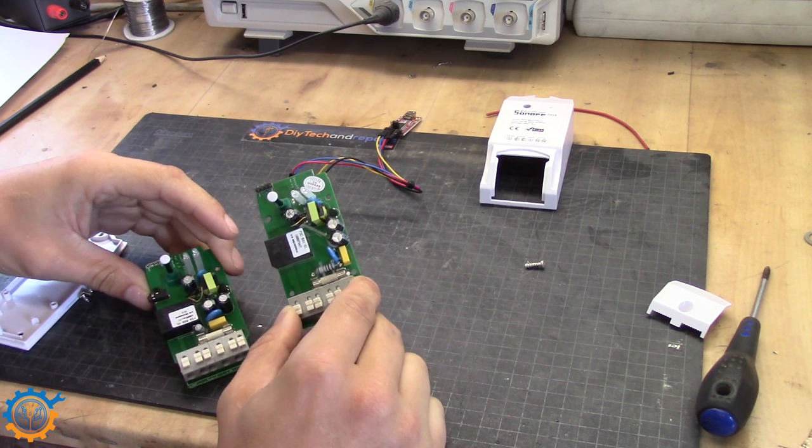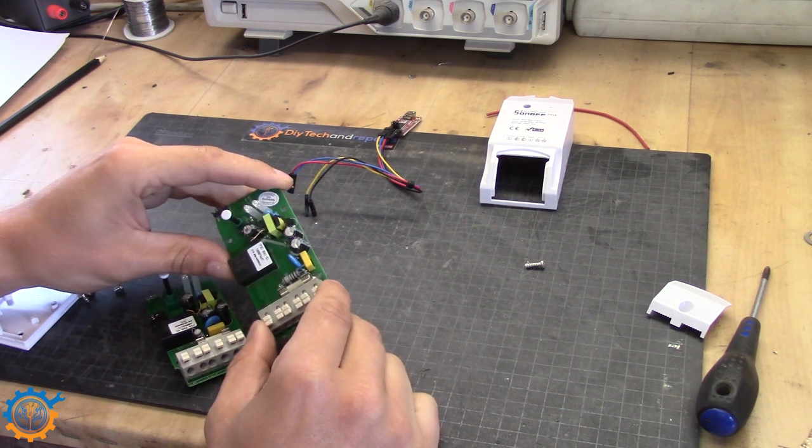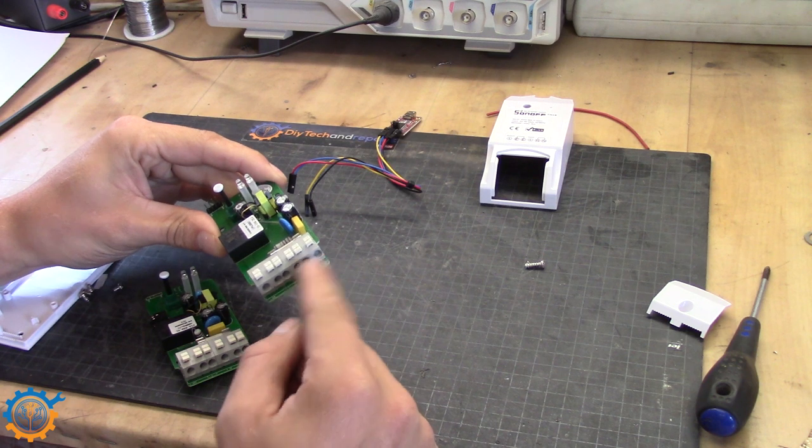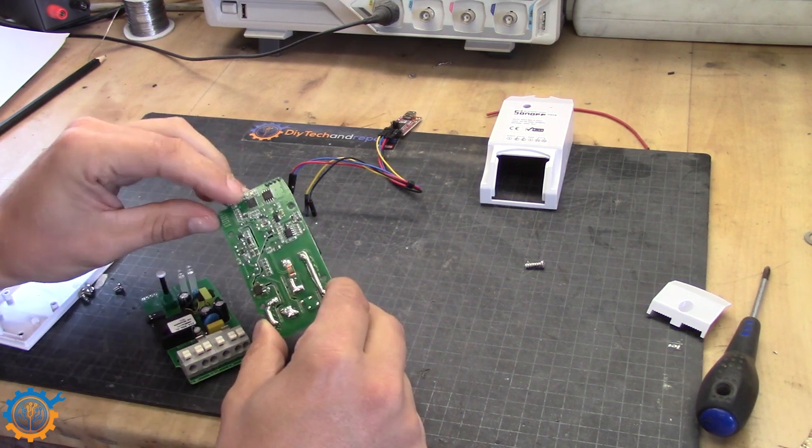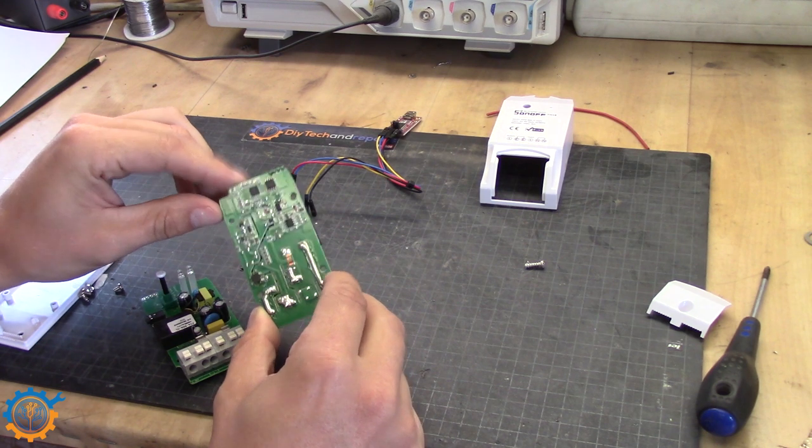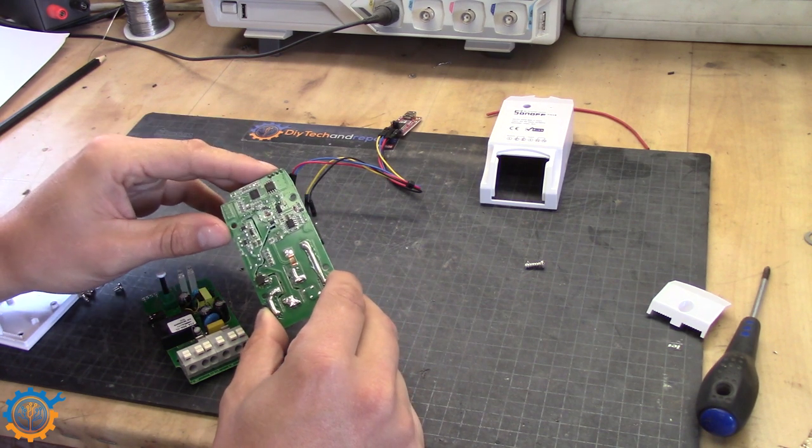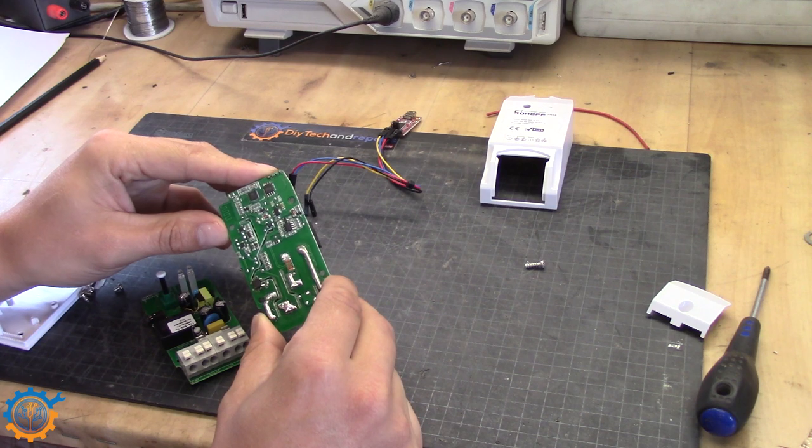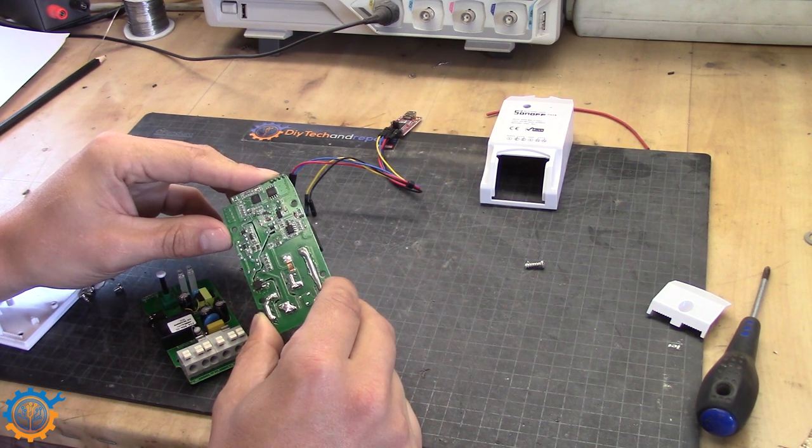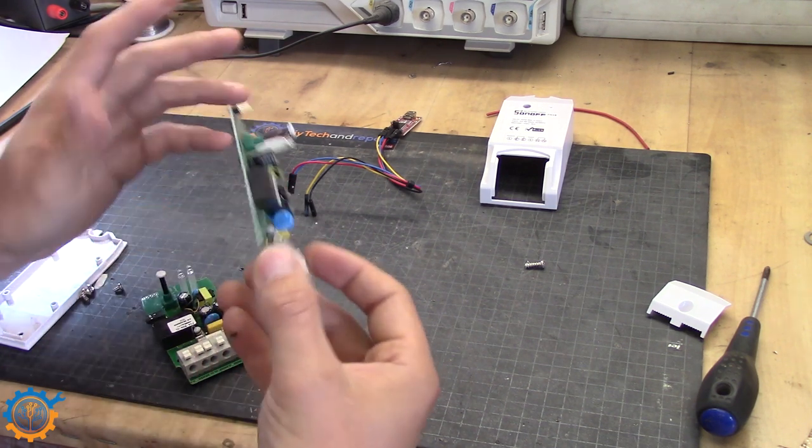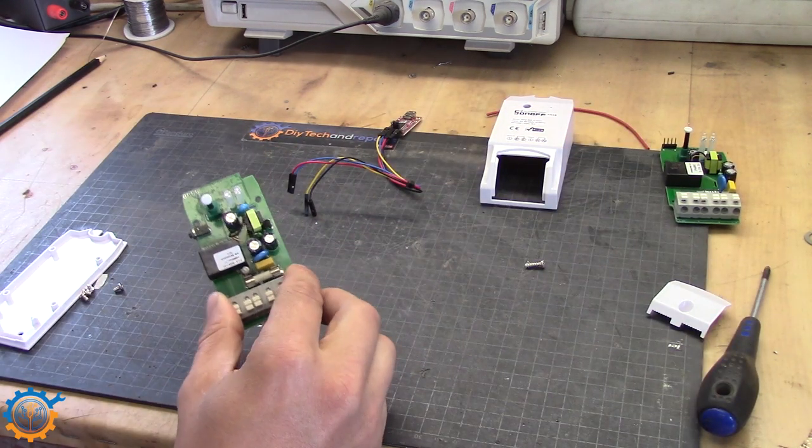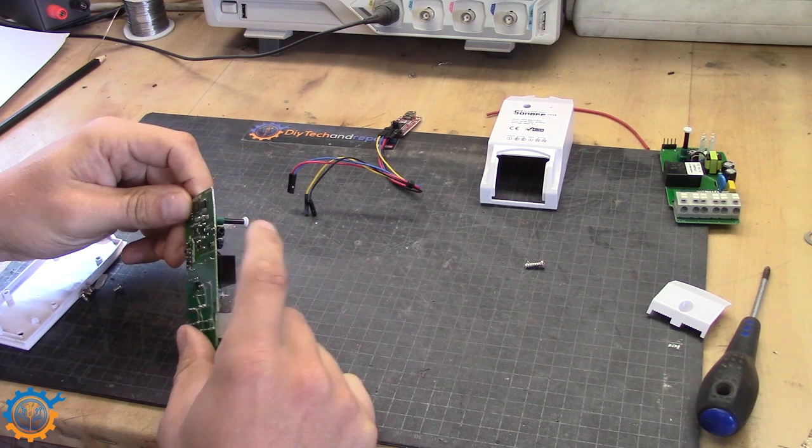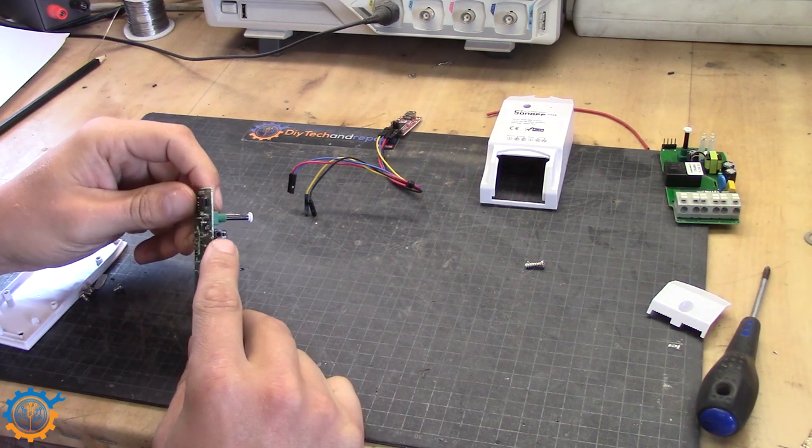After looking at those two devices I decided that I will not use the Sonoff POW in this video. The reason is that there is no isolation between the AC and digital pins from the ESP8266. That makes it a little bit trickier to hook up sensors without knowing what you are doing. In this video I will skip this one and use the TH16.